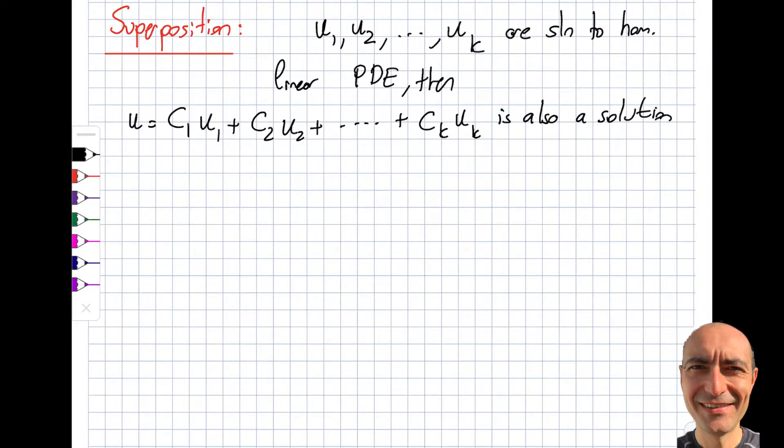Again, this is only applicable for homogeneous linear PDEs. This is coming from linearity of it. You can write this a little bit more fancy: if n equals 1 to k, I can write cn*un. That will be my superposition. We'll take advantage of this coming down the road, but for now this will be sufficient for the superposition principle.